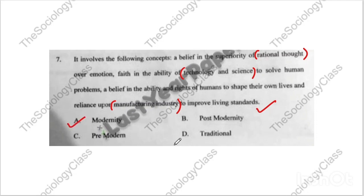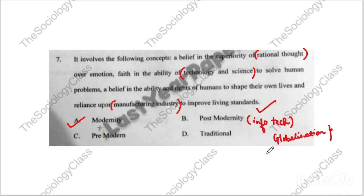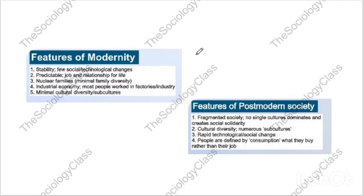You might be confused between modernity and post-modernity. When post-modernity is discussed, information technology and globalization are heavily mentioned — global village, easier communication. Modernity features include technological change, predictable jobs and relationships, nuclear families, industrial economy, and minimum cultural diversity. Post-modernity features include fragmented society, multiple cultures, rapid technological change, and people being defined by consumption — that last one is the most important feature of post-modern society.